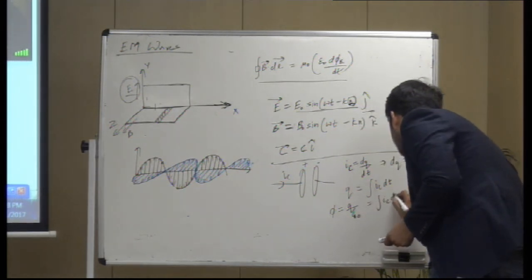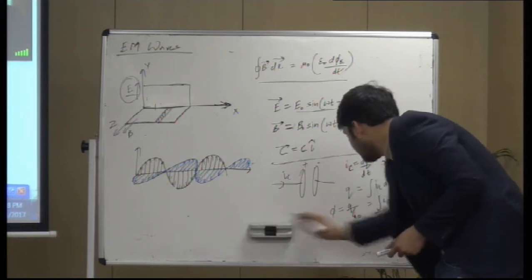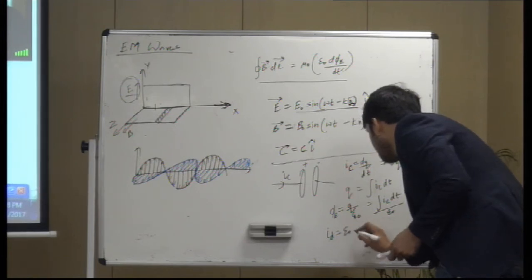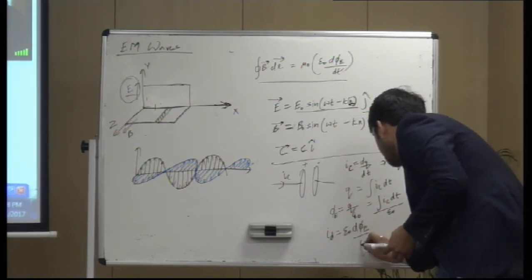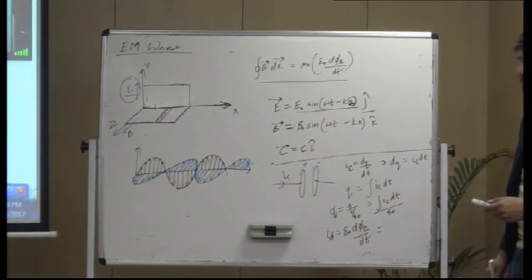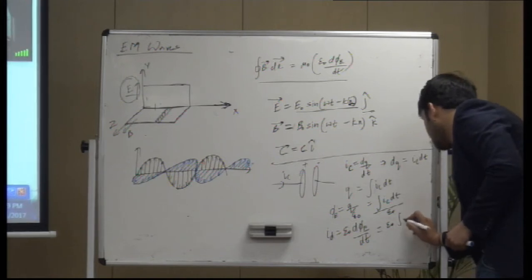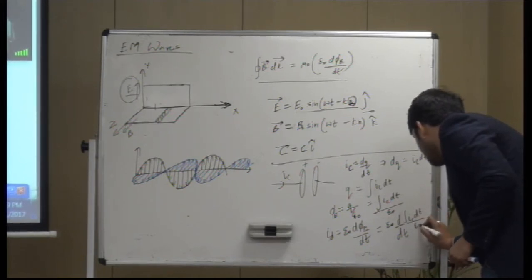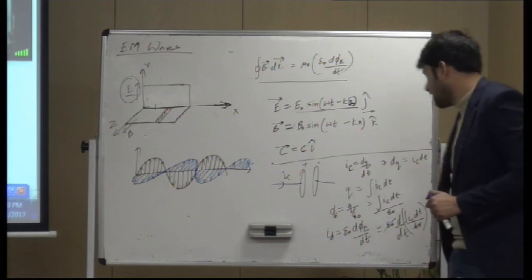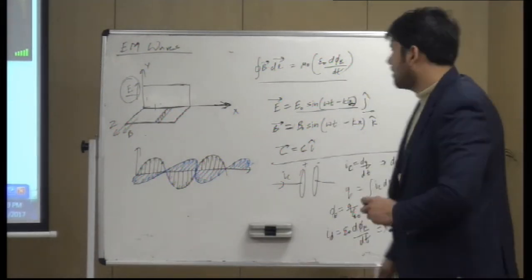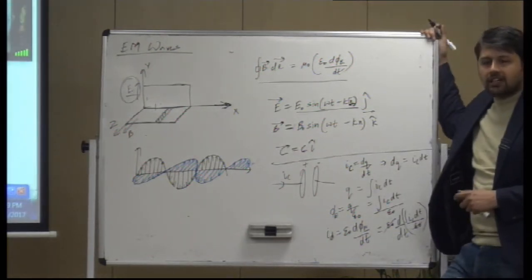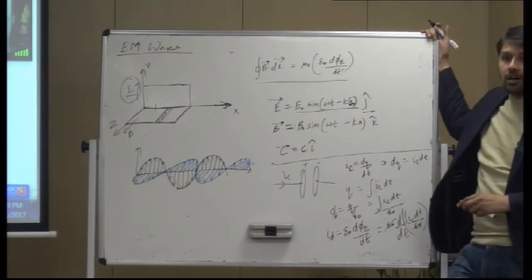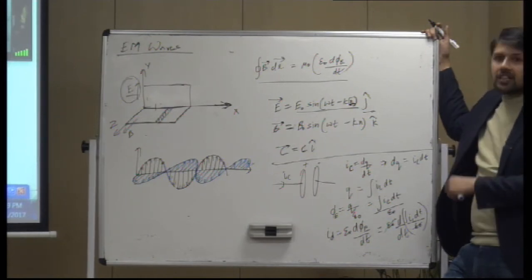Can I write integral I_c dt by epsilon naught as electric flux? This displacement current would be epsilon naught d phi_e by d t. Taking d by d t of integral I_c dt by epsilon naught, you can differentiate it and it would come out equal. You can take as many examples as possible — for all examples, these would be equal always. We just proved that they would be in the same phase as well.